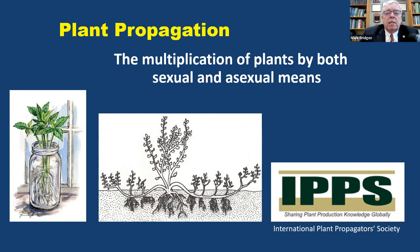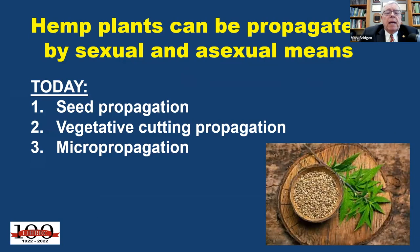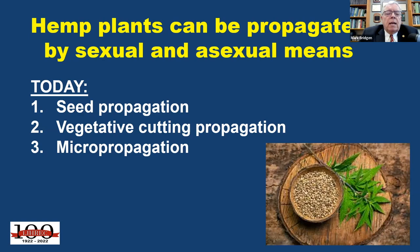Today we're going to talk about hemp plants and how to propagate them. They can be propagated by both sexual and asexual techniques. We'll cover three main areas: seed propagation for sexual propagation, and then two asexual propagation techniques — vegetative cutting propagation and micropropagation. Stem cutting propagation is the most commonly used for hemp, though hemp can also be propagated by grafting, layering, or other techniques.